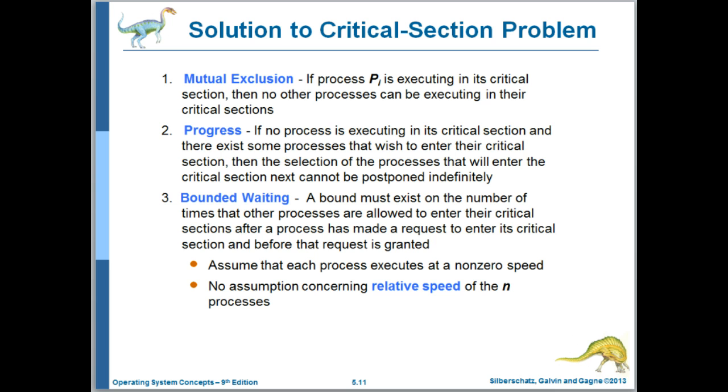So we'll say that any solution to the critical section problem has to have these three properties. First, and most importantly, mutual exclusion, which says that at most one process is in its critical section. And progress, which the previous solution violated, if there are several processes waiting to enter their critical sections, one will within a finite amount of time. In a sense, you can think of this one as saying that at least one process is in the critical section.